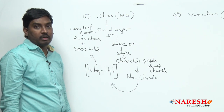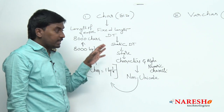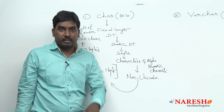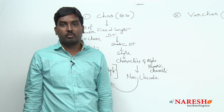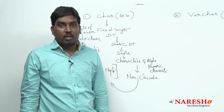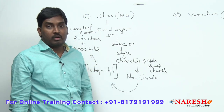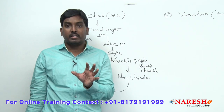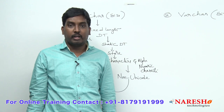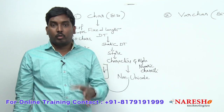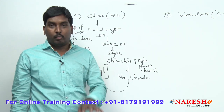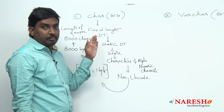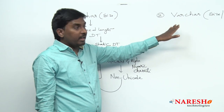The major drawback of the CHAR data type is memory waste. Memory saving is very important in real-time application development — memory management plays a very important role. To save memory and avoid unnecessary waste, instead of CHAR, you can use VARCHAR of a given size or MAX.